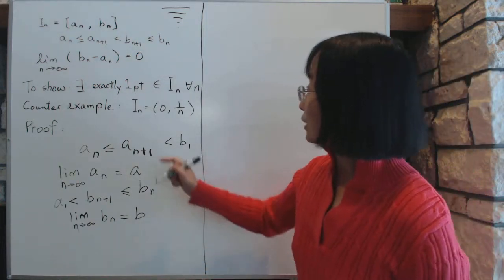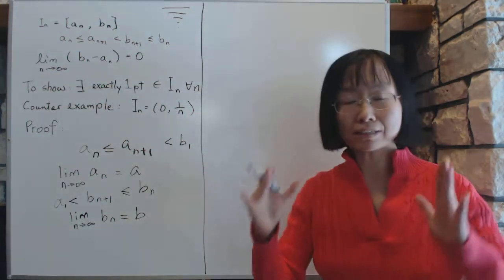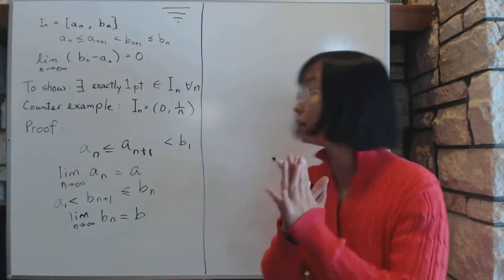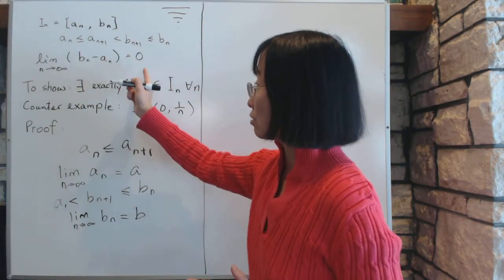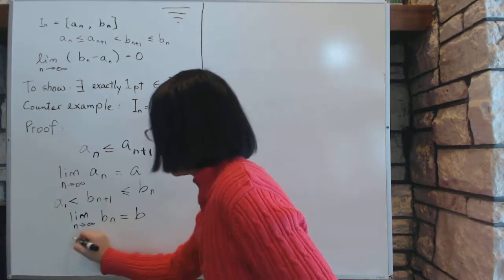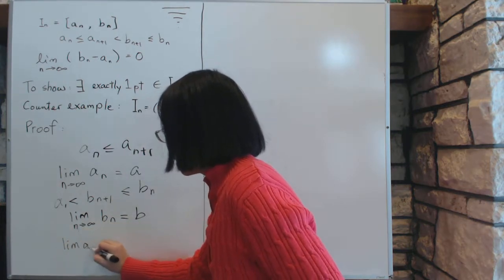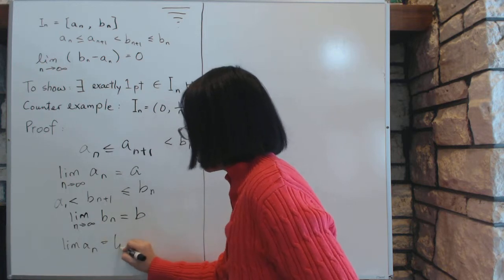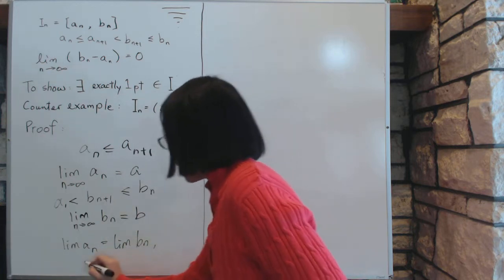And then what is the relationship of a and b? Now, based on this equation right here, which says that the length of the intervals are going to zero. Now, if the length is going to zero, that means the limit of b_n minus a_n is zero. Or, put it another way, if the limits are the same, so the limit of a_n is equal to limit of b_n. That is, a equal to b.